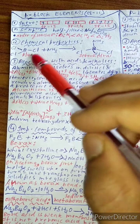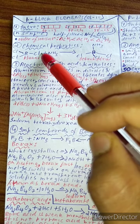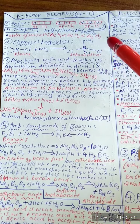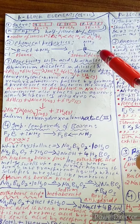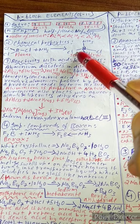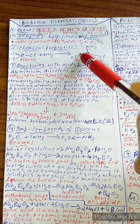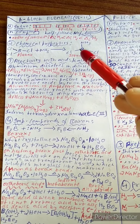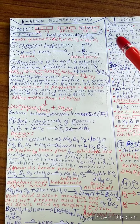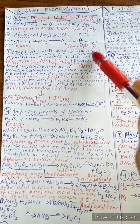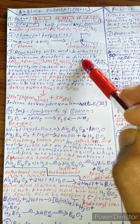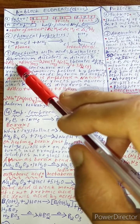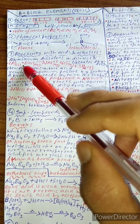BCl₃ is planar. It reacts with NH₃ to give a tetrahedral compound — BCl₃·NH₃. This is because BCl₃ accepts a lone pair from NH₃, forming a dative bond.